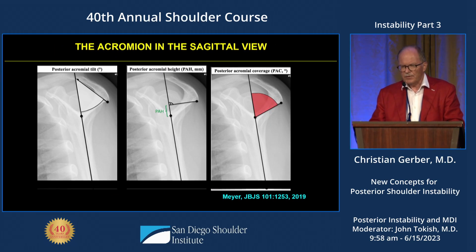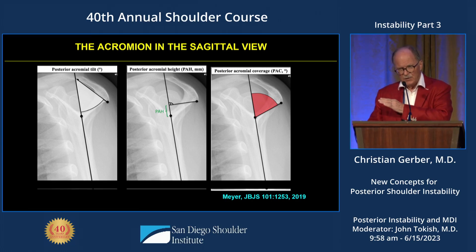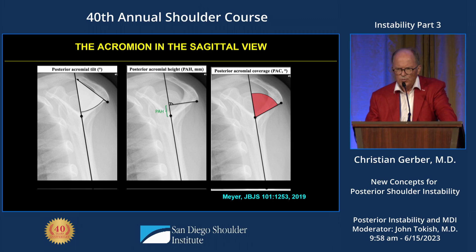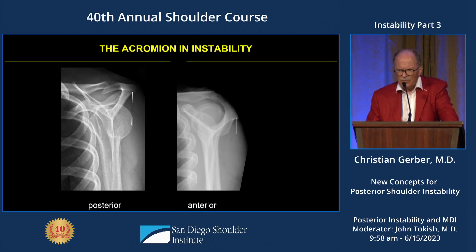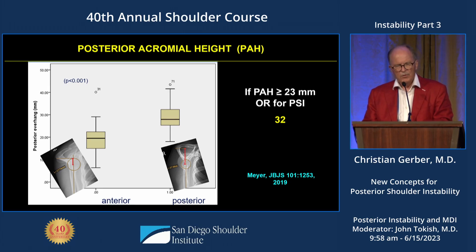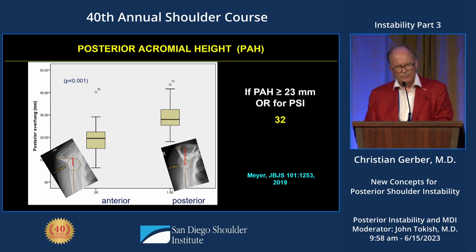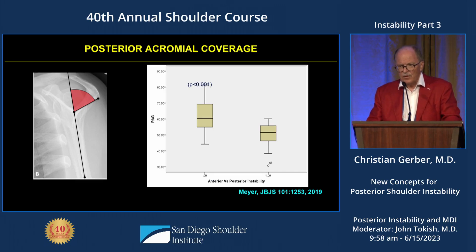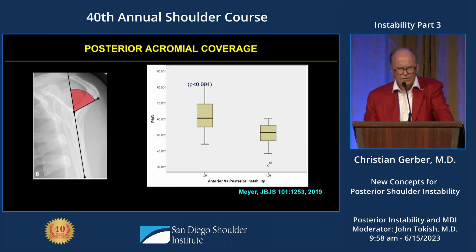What we measured was the posterior acromial tilt, posterior acromial height (PAH) — that is the inferior part of the posterior lateral aspect of the acromion to the center of the glenoid — and the posterior acromial coverage wing angle. The posterior acromial height in posterior shoulder instability is highly significantly different from normal and from anterior instability. In this series, if you had a posterior acromial height of more than 23 millimeters, your odds ratio for posterior shoulder instability was 32. Looking at posterior acromial coverage, exactly the same thing was found — the posterior acromion is much higher and covers the head much more poorly.